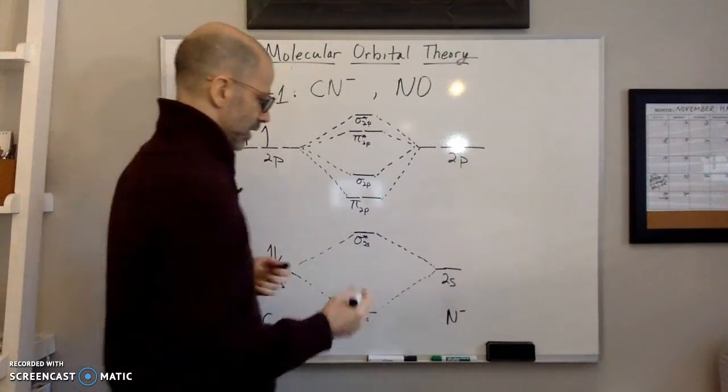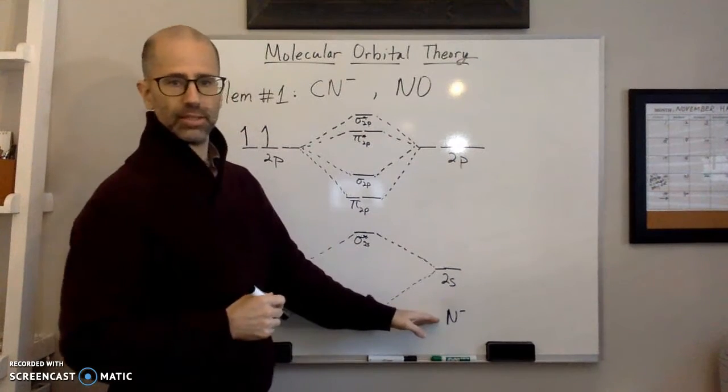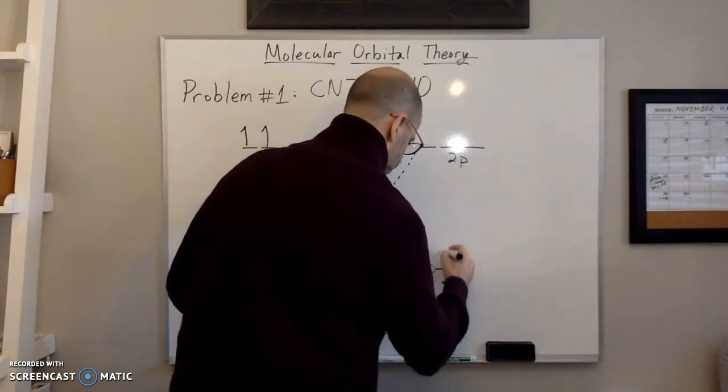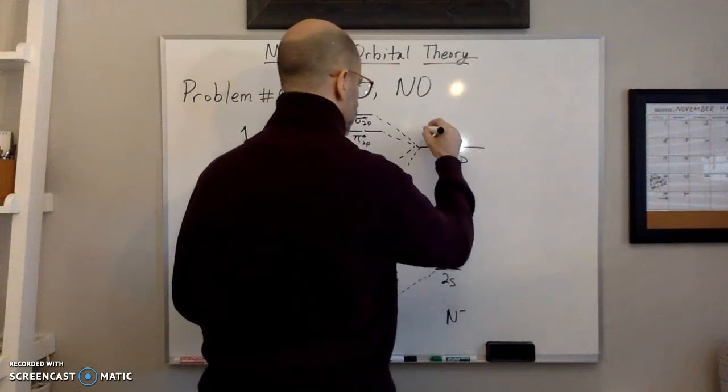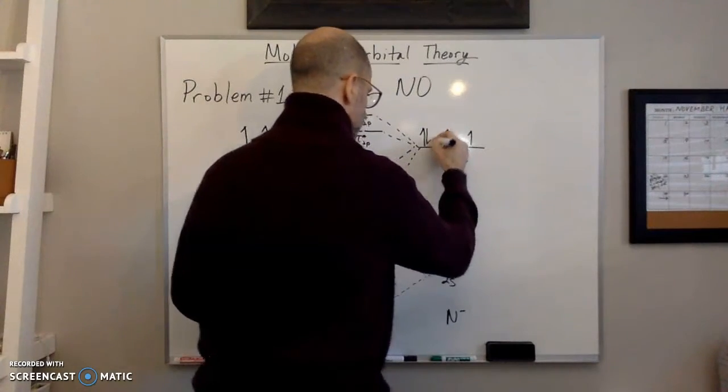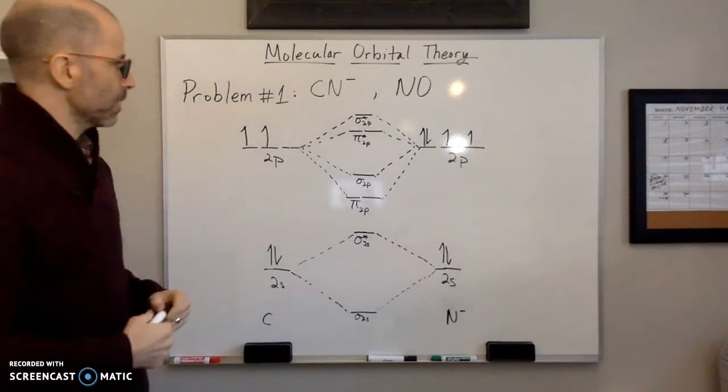And then for N minus, this has five valence electrons plus one, so it's got six. So we'll put one, two, three, four, five, six.